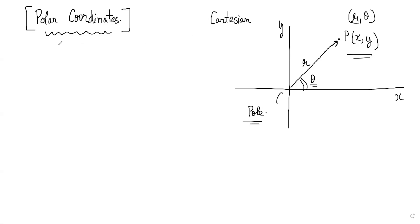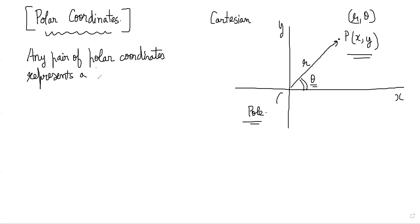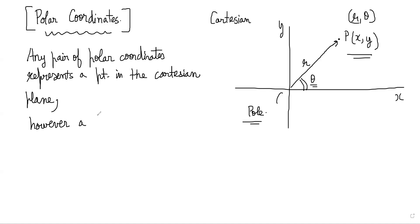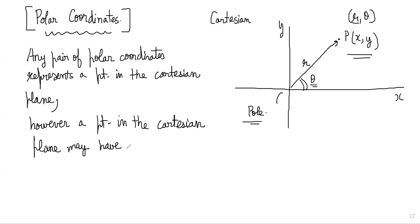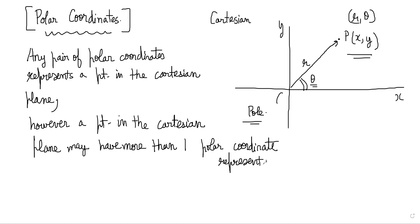Any pair of polar coordinates represents a point in the cartesian plane. However, a point in the cartesian plane does not have a unique polar coordinate representation — it may have more than one. So it's not a one-to-one correspondence between points in the cartesian plane and the set of possible polar coordinates.